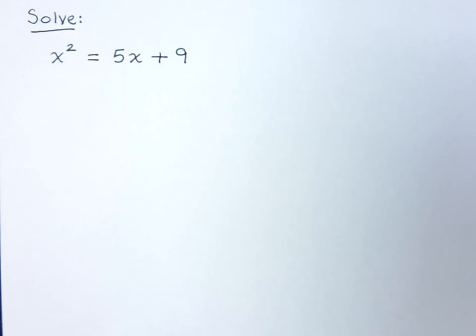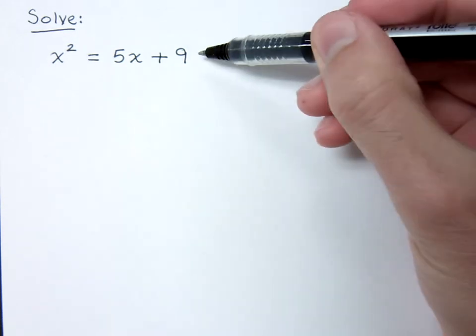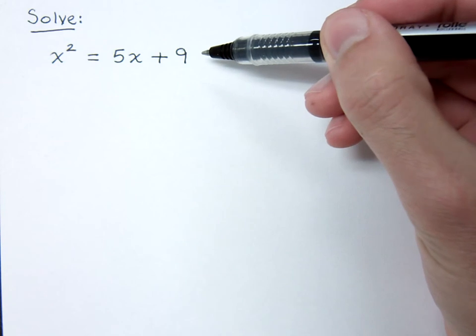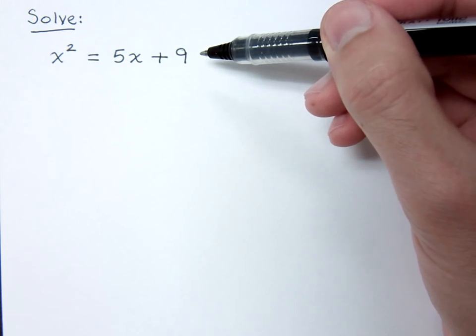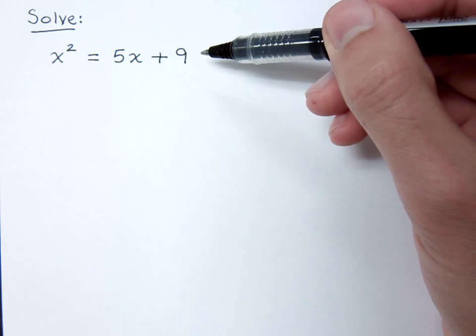In this video we want to look at solving the quadratic equation x squared equals 5x plus 9. Now there are many ways we can try to solve this. One way is by factoring, but I'll tell you right now that's not going to work. We also have completing the square, which could work, but it's not going to be very pretty. But what we want to look at here specifically is how to solve this using the quadratic formula.